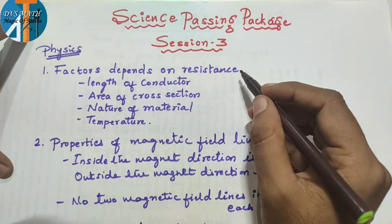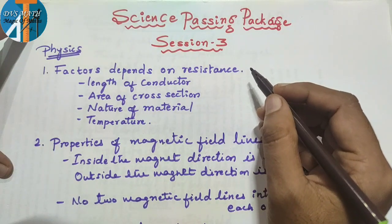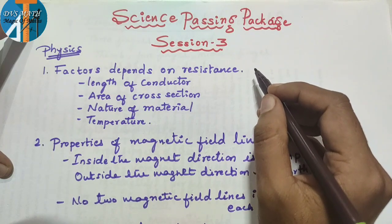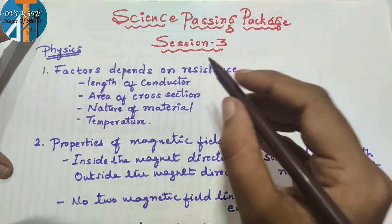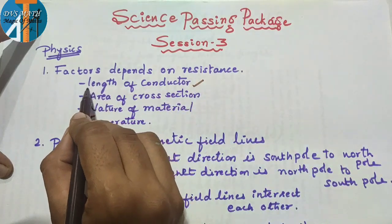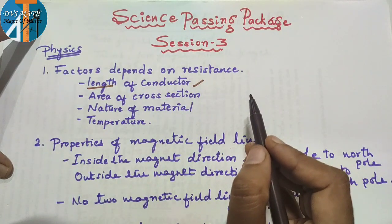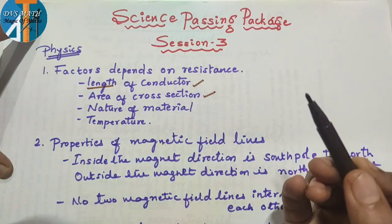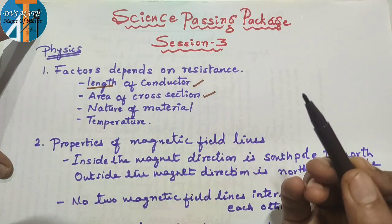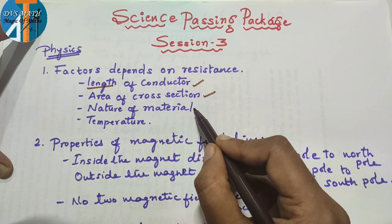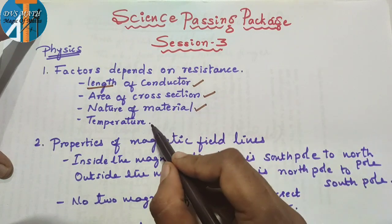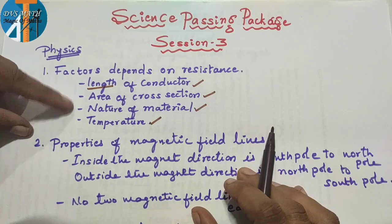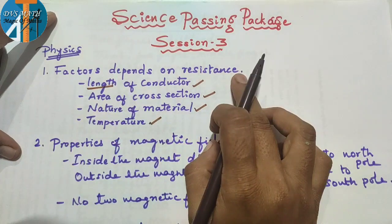What are the factors that depend on resistance? First, length of conductor. Second, area of cross-section. Third, nature of material. Fourth, temperature. These are all four factors which depend upon the resistance.